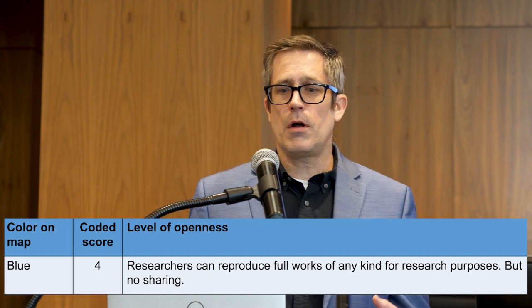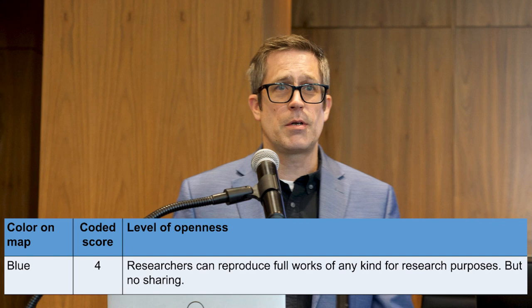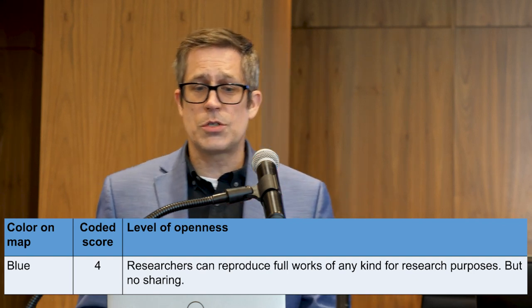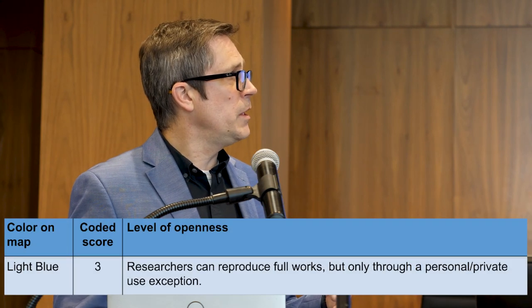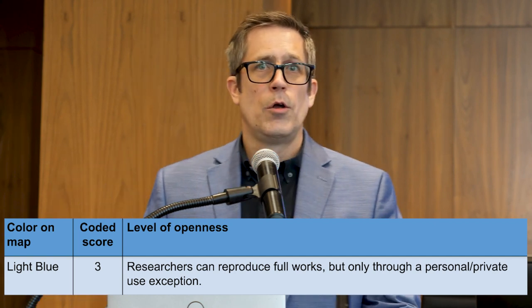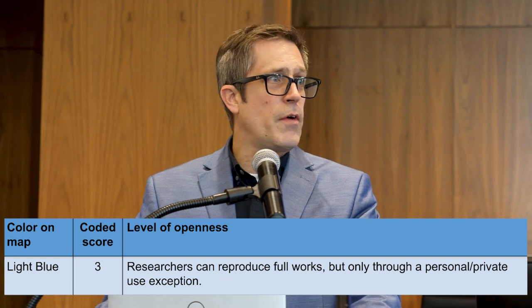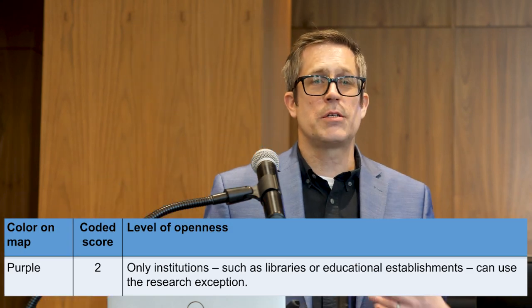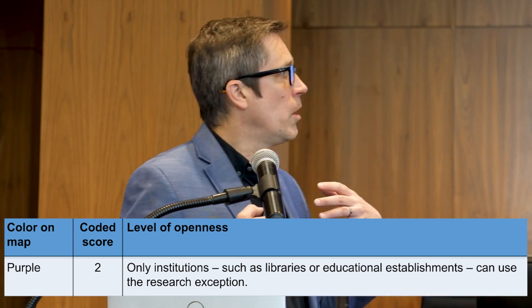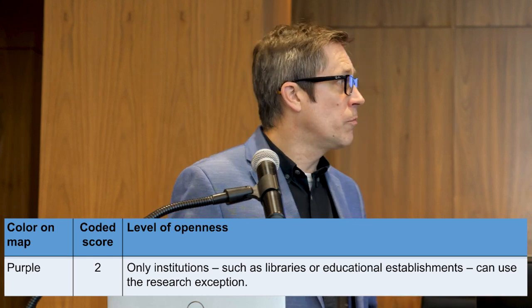If you get a little less open, you have what we called blue in the maps, which is 4 — the law permits researchers to make reproductions for research purposes, but not necessarily to share them with each other. There's no restriction on the users that can use this type of law, and it can be limited to non-commercial works as well. Light blue is 3 — that's where researchers can make reproductions but have to rely on a personal or private use exception, which is found in almost all copyright laws. By definition, this is limited to non-commercial uses and applies to individuals. Next we have 2, or purple — that is a right that only can be used by institutions. A person cannot make a copy, but a library can, a university can, or a commercial research center, or an employee of any one of those.